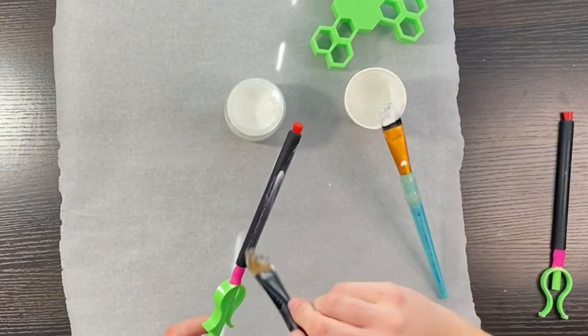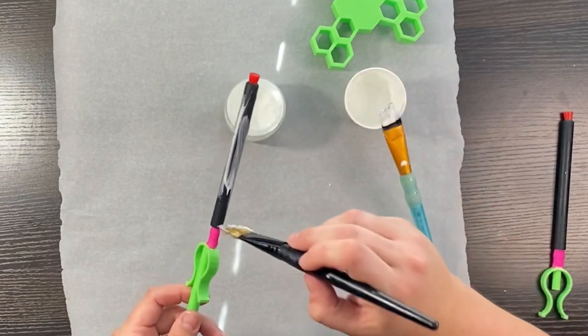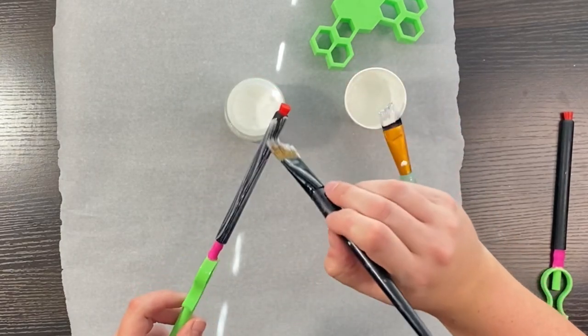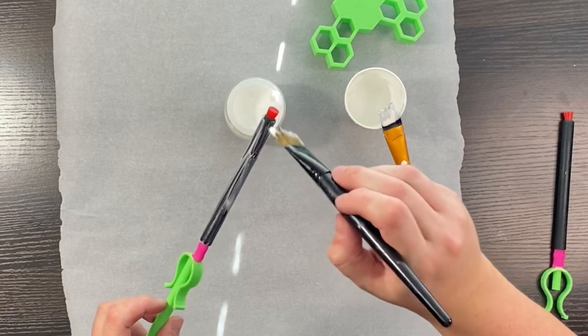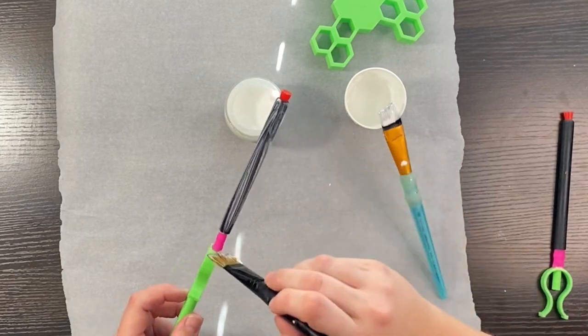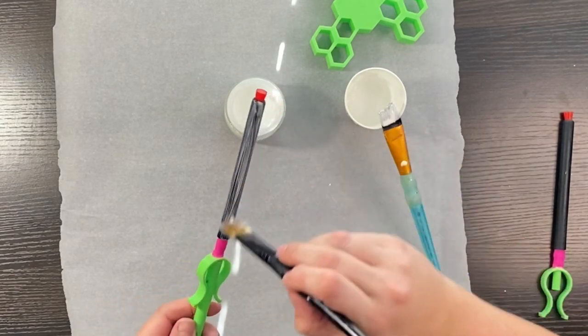The thicker you paint your glue on, the larger the cracks are going to be. But be careful not to do too thick because it can slide as it's drying. Really thin is going to give you more refined crackle.